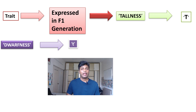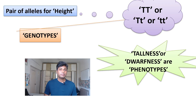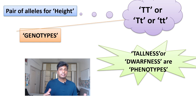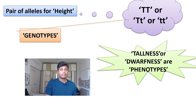Let's assume that capital T is the symbol for tallness and small t is the symbol for dwarfness. The symbols TT, Tt, and tt are the genotypes of the plant — also known as the genetic representation of a particular character. At the same time, tallness or dwarfness are the phenotypes of the plant — the external features of an organism.